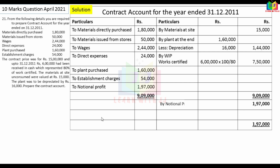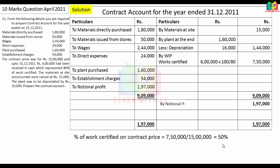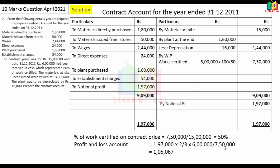From the notional profit of Rs.1,97,000, the transfer to Profit and Loss is calculated using the formula: 2/3 × notional profit × (cash received ÷ work certified) = 2/3 × Rs.1,97,000 × (Rs.6,00,000 ÷ Rs.7,50,000) = Rs.1,50,667. The remaining Rs.91,933 is transferred to General Reserve as a balancing figure.